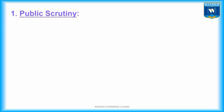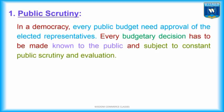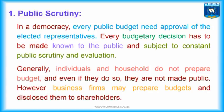Point No. 1 — Public Scrutiny. In a democracy, every public budget needs approval of the elected representatives. Every budgetary decision has to be made known to the public and is subject to constant public scrutiny and evaluation. Generally, individuals and households do not prepare budgets, and even if they do, they are not made public. However, business firms may prepare budgets and disclose them to the shareholders.